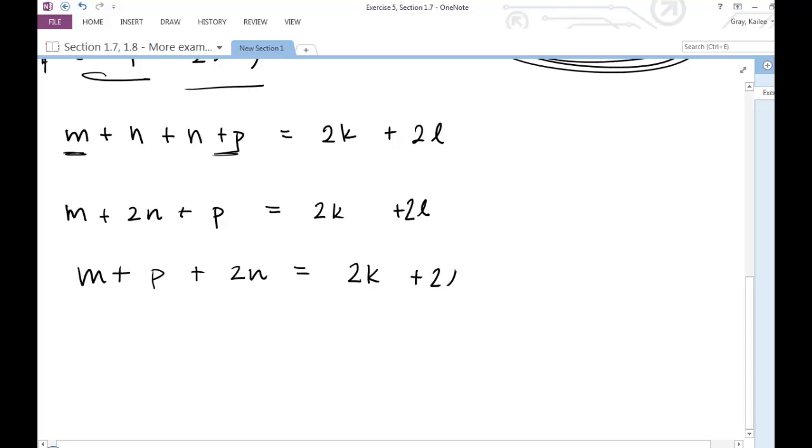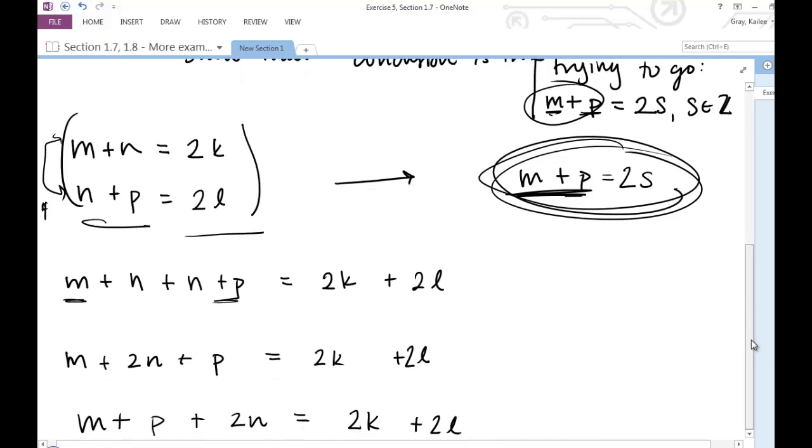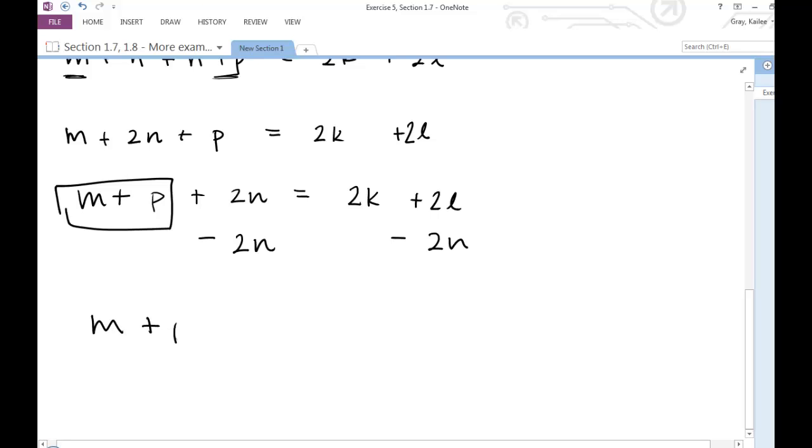So now I have it as an equation, so that allows me to do a lot more than just with expression. So I want to end up with m plus p equals something. So just like when you're solving for a variable with an equation, let's go ahead and isolate that term. How would we isolate that? Well, we have this 2n here. I'd like to just end up with m plus p. So now m plus p is equal to, this adds to 0, so I'm just left with m plus p. It's equal to 2k plus 2l minus 2n.